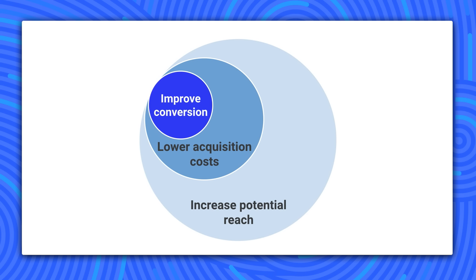AliExpress already had a mobile website and decided to supercharge it with PWA features, getting terrific results. To understand why this is important, think about the big pie of potential users: you want to increase potential reach, reduce acquisition costs, and improve conversion rates. Once you put the figures together, the web starts to look pretty good.